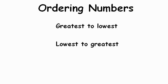To review, we've been practicing ordering numbers from greatest to lowest and lowest to greatest. Greatest to lowest means biggest number to smallest number. Lowest to greatest means smallest number to biggest number. Great job — can't wait to talk to you about math soon. See you soon!